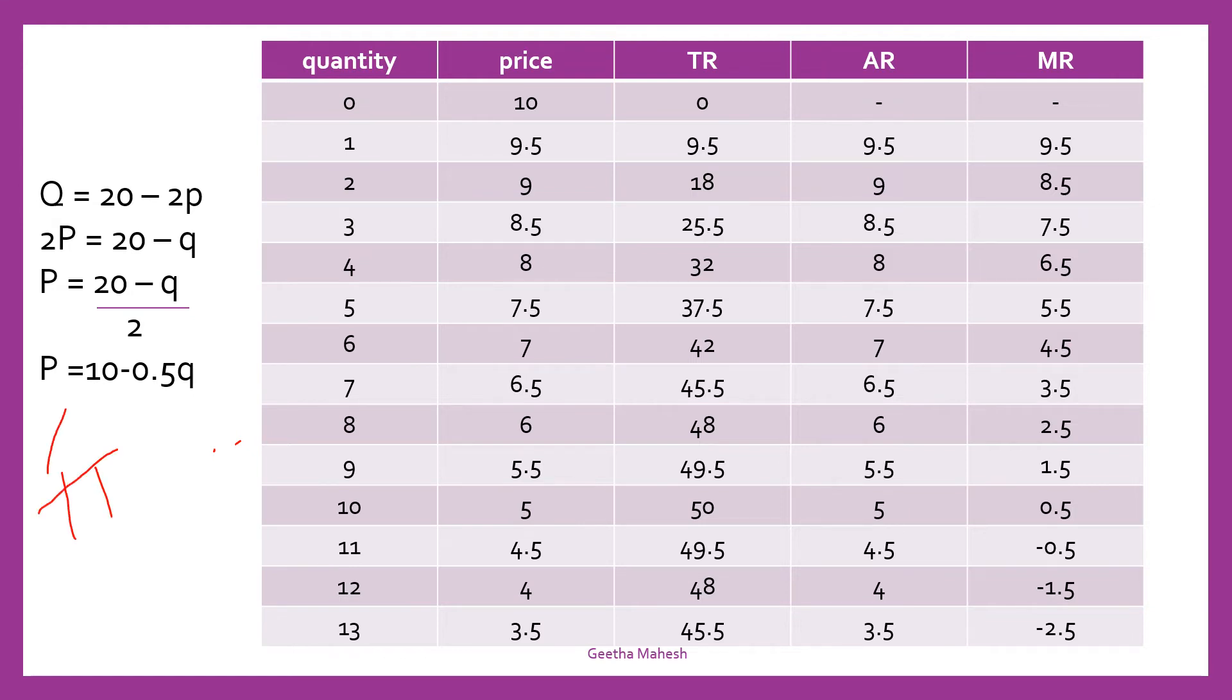But here in the zero cost theory, the profit can be maximized when total revenue is maximum. We know that profit is equal to TR minus TC. But we know this TC is 0. So, when profit will be maximum? When TR is maximum.